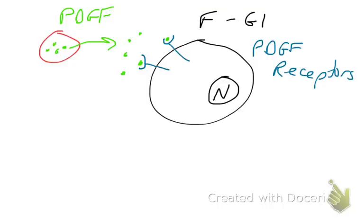And what does this binding do? Well, it sends a signal into the nucleus to say, Hey, you know what? Fibroblast, you need to grow. We need more of you. We've got a wound.